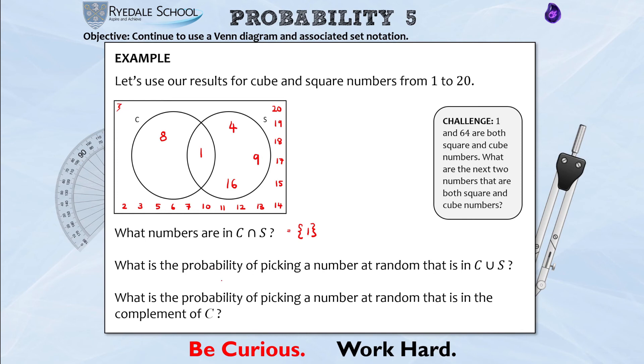Now pay attention to this second question because the second question is slightly different. It isn't asking us what numbers, it's now asking us what is the probability of picking a number at random that is in the union of C and S? So remember the union is everything all together in C and S. Okay, and you can see there's one, two, three, four, five, five numbers that are in C and S. Don't count the intersection twice. So don't go oh there's two in C and there's four in S so that is six, no there's only five all together.